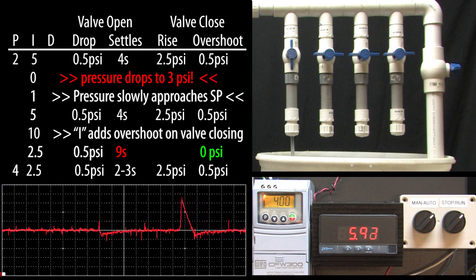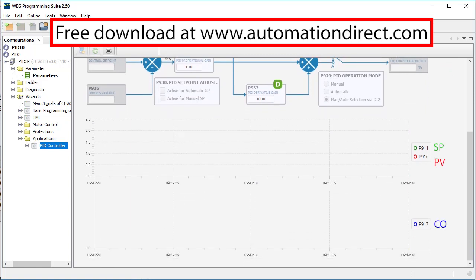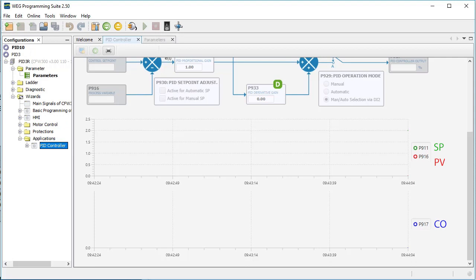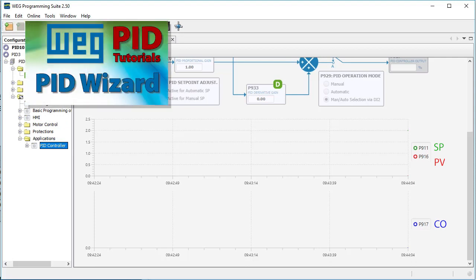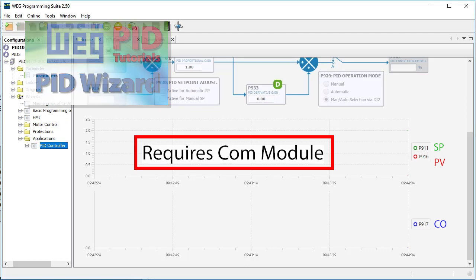But what if you don't have an oscilloscope? Guess what? The free WEG programming software has a built-in PID wizard that displays the process variable and the set point and the control output in real time for you. No oscope required. You just need a communications module for the drive so the WPS software can talk to it. How about that?